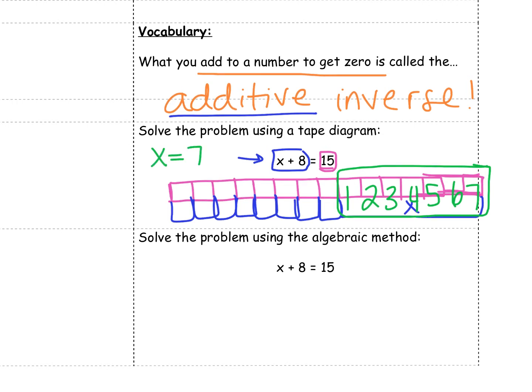However, this is not always realistic to model or diagram all of these problems, so we can use it algebraically as well. When we solve algebraically, anytime we have a problem, we want to draw a line through our equal sign, dividing our problem in half. So x plus 8 equals 15. Draw a line through my equal sign. Why we have that line is because anything I do on the left side, I have to do on the right side. We're trying to keep it balanced, just like if it was a seesaw.